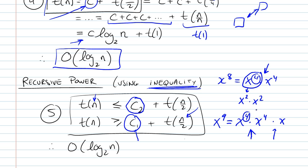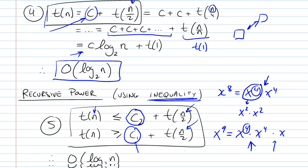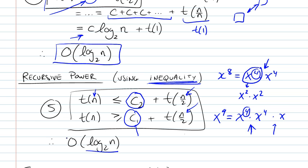And this again is dependent on the number of times we could divide a number by 2. And just as we saw in the binary search, this is going to be log n base 2.